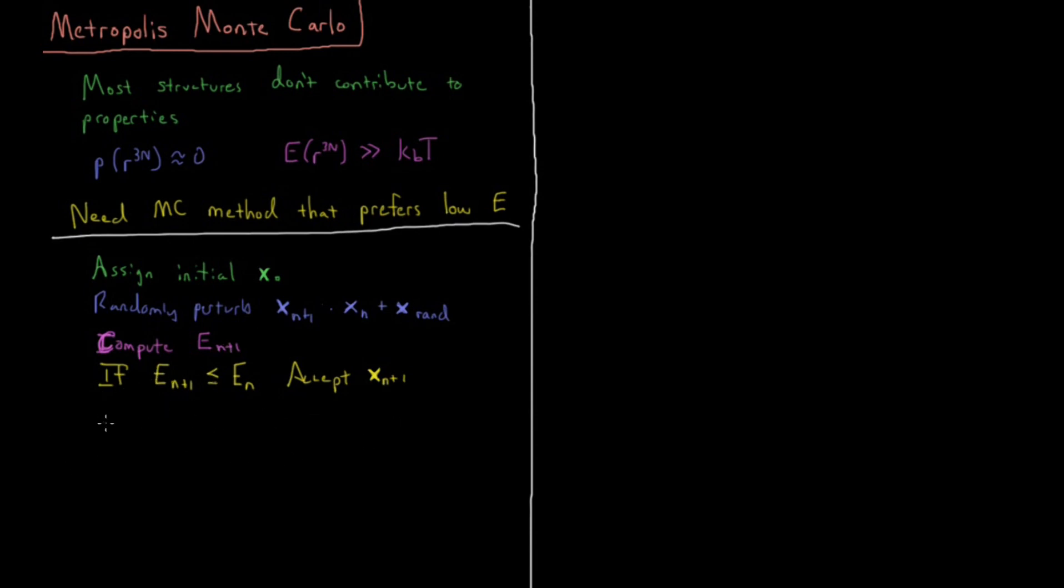What if it doesn't? If Eₙ₊₁ is greater than Eₙ, this is where we bias towards low energy structures. If it's low energy we accept it, if it's high energy we have to think about it. If the energy goes up, we compare e^(-(Eₙ₊₁ - Eₙ)/kT). This is a relative Boltzmann factor, e^(-ΔE/kT).